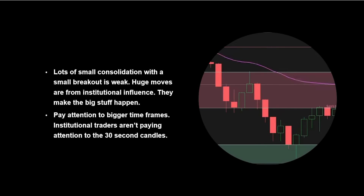For example, I see that price is leaving the demand zone at the bottom — I set an order with a profit take one tick below the entrance to the supply zone, and maybe I set my stop loss just below the entrance to the demand zone. This would be super safe, but maybe I want to get out if this isn't a move that immediately goes back up. Lots of small consolidation with a small breakout is not a strong setup. Huge moves are from institutional influence, and those are the levels that matter to us. We can use volume profile to show us the price levels where the most volume is happening, and volume profile the supply and demand zones to see where all of the action is.